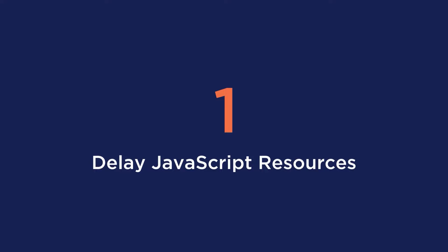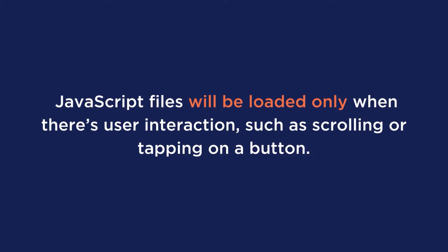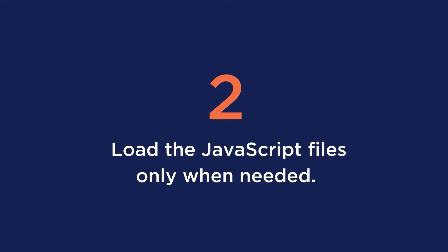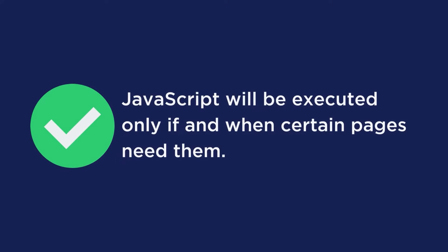Once you see the JavaScript with these tools, here are two ways to go about reducing it. First, you can delay JavaScript resources. Doing this, the JavaScript files will only be loaded when there's a user interaction, such as scrolling or tapping on a button. It's important to note that not all the scripts from the PageSpeed recommendation list can be safely delayed. You should only delay the JS files that are above the fold because they are render-blocking resources. Second, you can load the JavaScript files only when needed, meaning the JavaScript will be executed only if and when certain pages need them. You can think about the plugins and specific themes or page builders that you use.